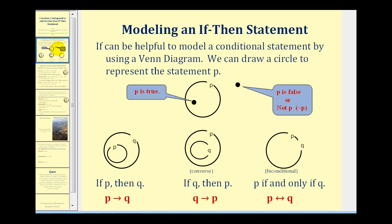It can be helpful to model a conditional statement by using a Venn diagram. We can draw a circle to represent the statement P. So if we're inside P, P is true. And if we're outside P, P would be false, or we could say not P.